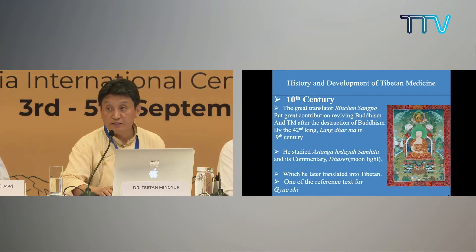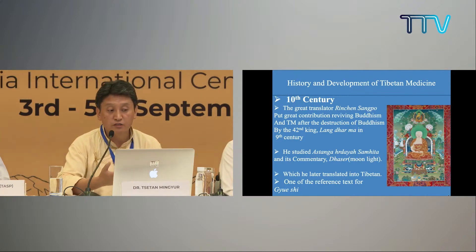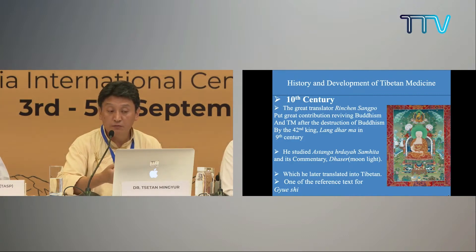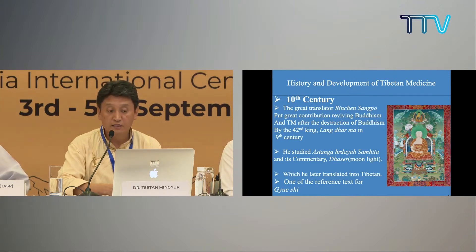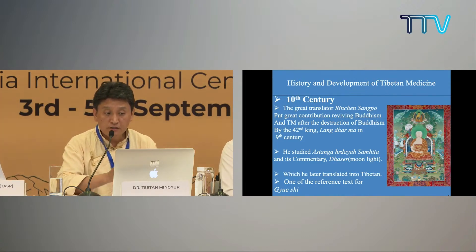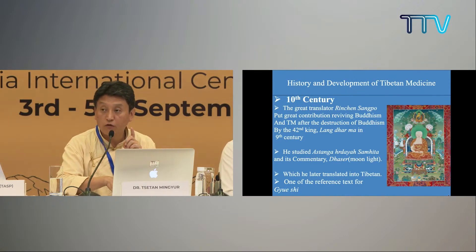In the tenth century, the great translator Rinchen Sangpo made great contributions in reviving Buddhism and Tibetan medicine after the destruction of Buddhism by the 42nd king, Lang Dharma, in the ninth century. Rinchen Sangpo also translated the Astanga Hridaya Samhita and its commentary, Dasir Moonlight, into Tibetan. This became a very important text and one of the reference texts for Gyushi.